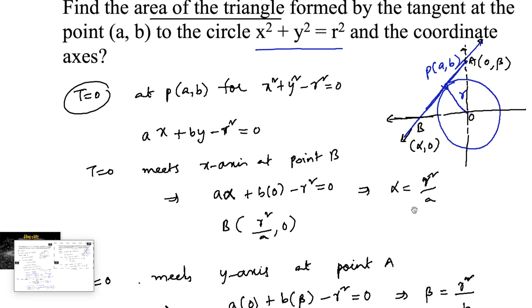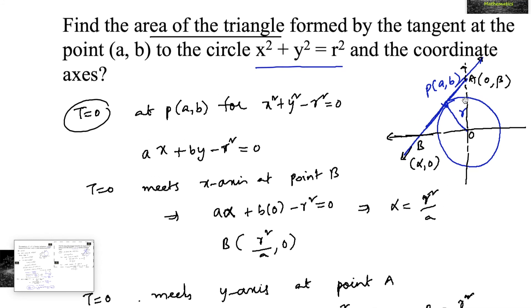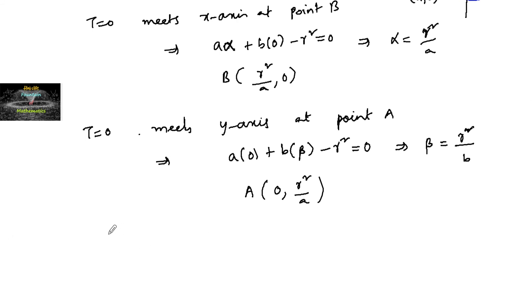We know the area of triangle formed by the coordinate axes and a line. Area of triangle OAB can be taken as ½ × OA × OB. So ½ × |r²/a| × |r²/b|.